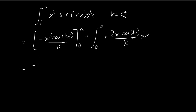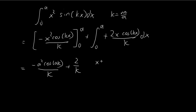Substituting a, we get negative a squared cosine ak divided by k. Then putting in 0, you just get 0. And here you see you have an integral of x cosine kx, so we can just do integration by parts again.